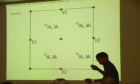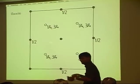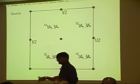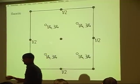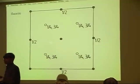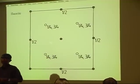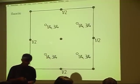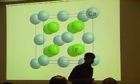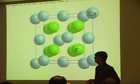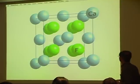So very simple. It's cubic F with the motif of a calcium atom at zero, zero, zero, and a fluorine atom at a quarter and three quarters. And that's what it looks like in three dimensions.